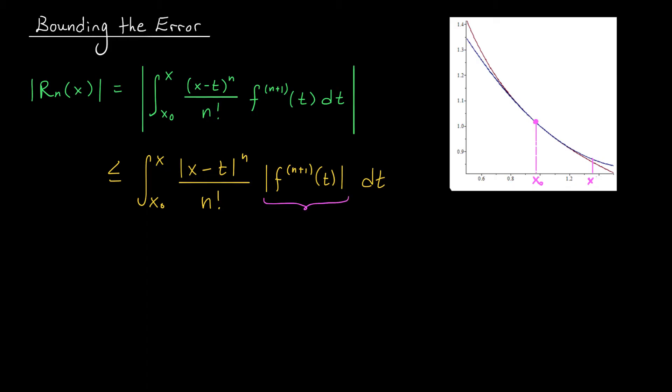We're going to assume that we know the function f, and we've managed to show that its (n+1)st derivative at t is bounded above in absolute value by a constant k. We're going to need this to be true over the entire domain of integration for values of t from x0 to x. You'll see how to pick this constant k in some of our example videos.